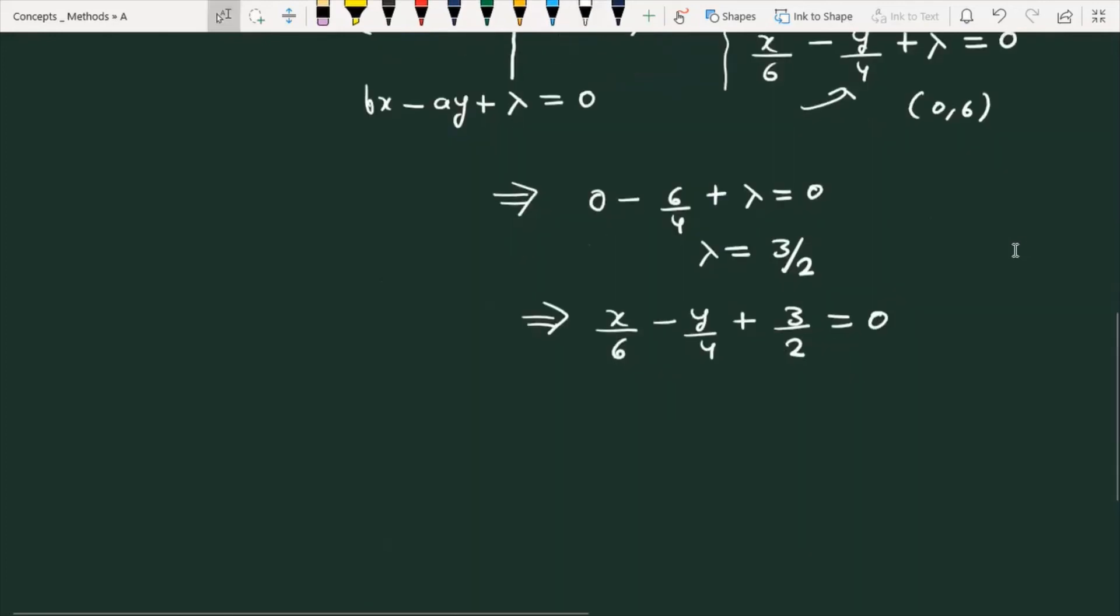If you want to further simplify this equation, multiply by 12. After multiplying by 12, you get 2x - 3y + 18 = 0. Finally, this is the line which is perpendicular to the given line and passing through the point (0,6).